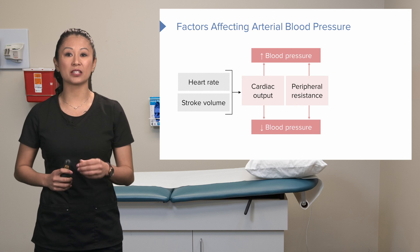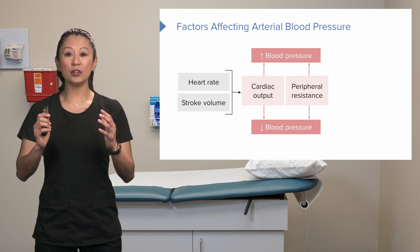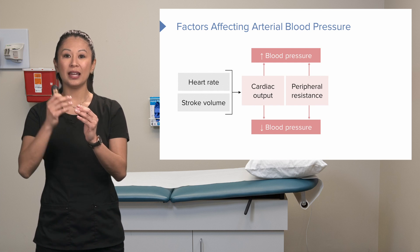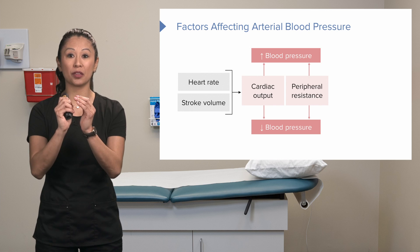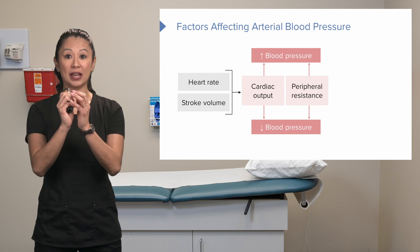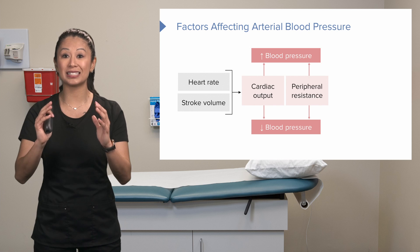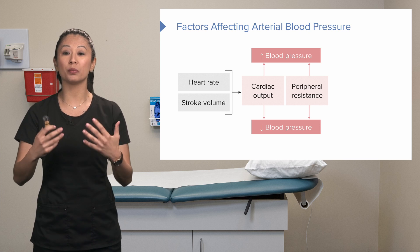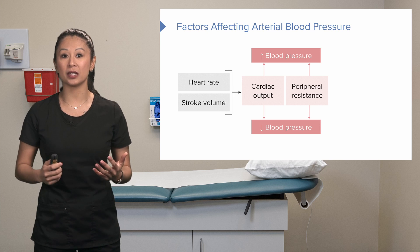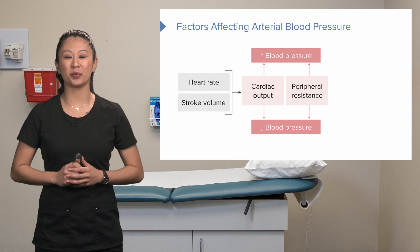Peripheral resistance is the resistance of the vessels to blood flow. If a vessel constricts, there's a lot more resistance — the same amount of fluid through smaller vessels means high resistance. If a vessel is wide and open with the same amount of pressure going through, resistance decreases and blood pressure would be lower. Cardiac output and peripheral resistance can either raise or lower blood pressure.